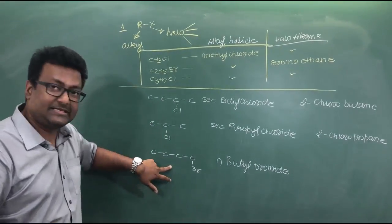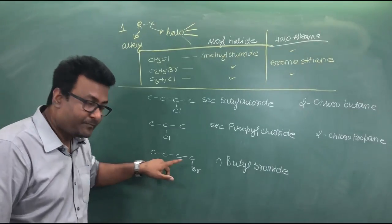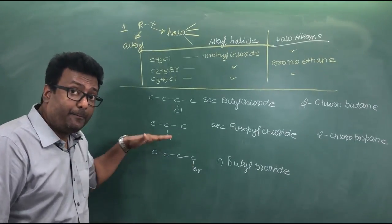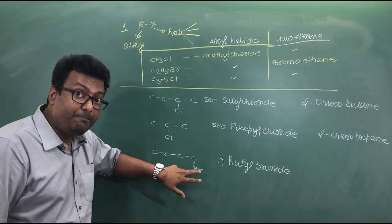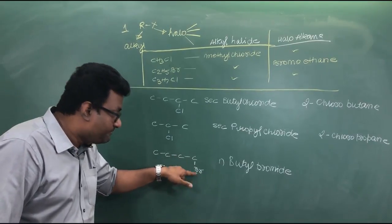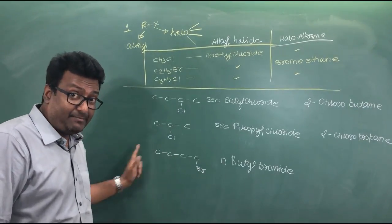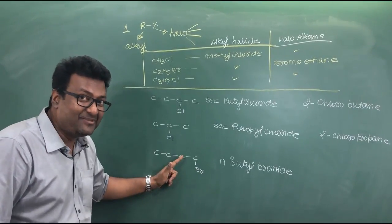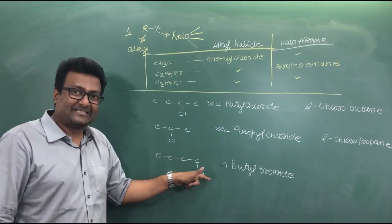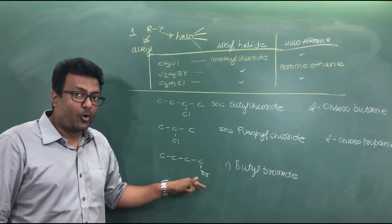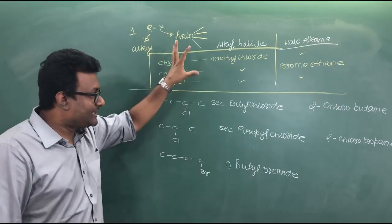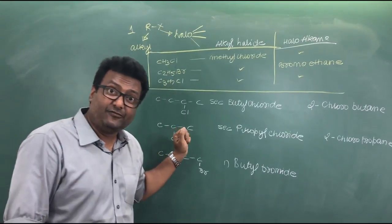For a four-carbon chain with bromine — counting from the correct side to give the lowest locant — this is 1-bromobutane. Counting from the other side would give 4, which is wrong, so it must be 1-bromobutane. I'll give you some questions to see if you can solve them.